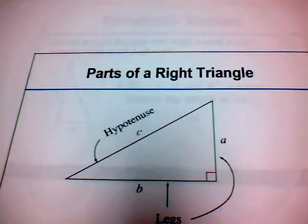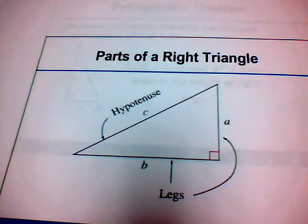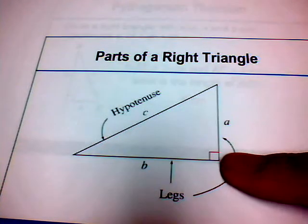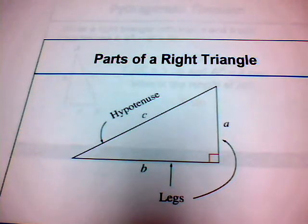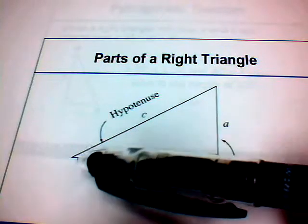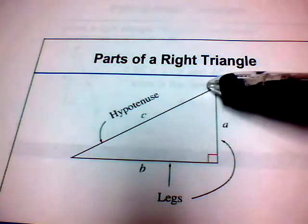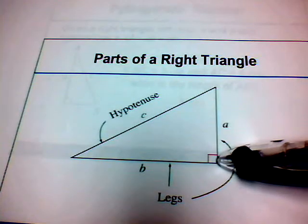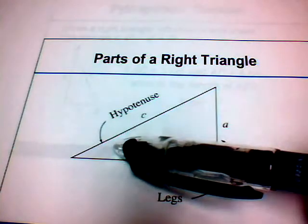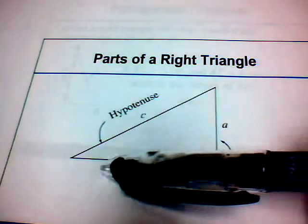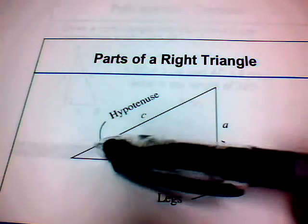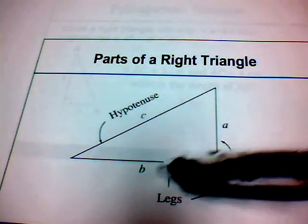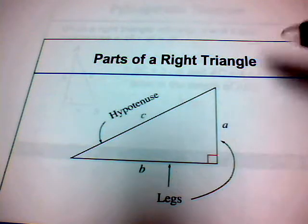Let's look at a right triangle. A right triangle is a triangle that has a right angle in it. In a right triangle, there are special names for the sides. The longest side, which is the side opposite the 90-degree angle, is called the hypotenuse. The other two sides are called legs. So the hypotenuse is always the longest side, and the other two sides are called legs.